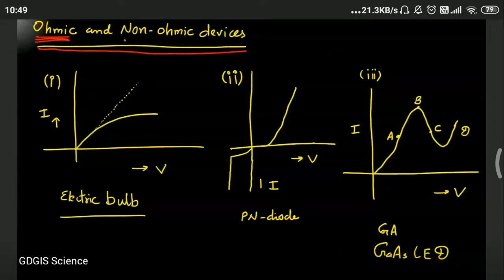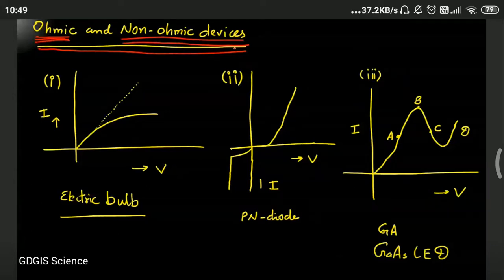And now, what are non-ohmic devices? Those devices which do not follow Ohm's law. Just like we know the electric bulb, it is made up of a filament.